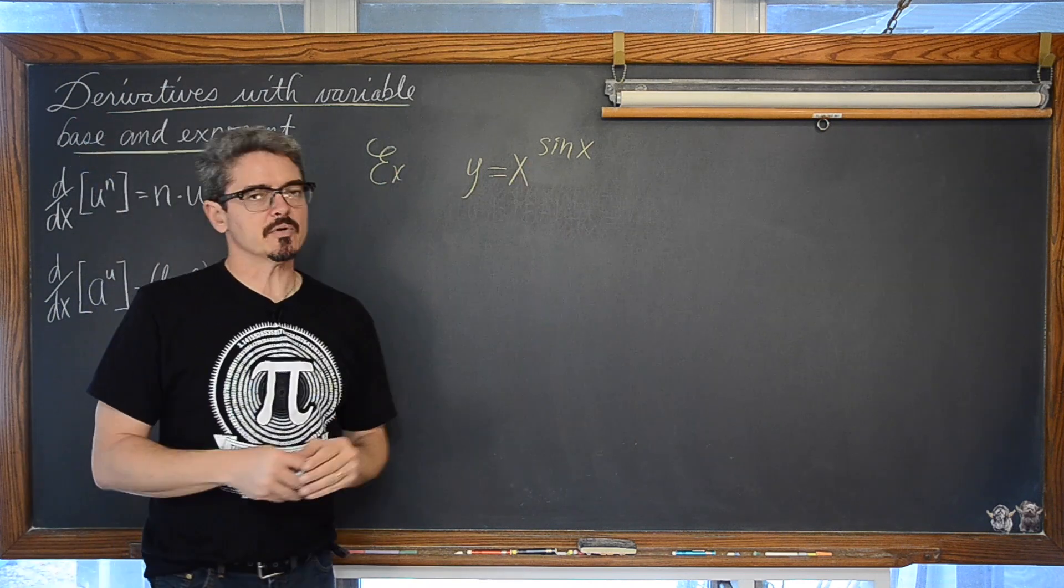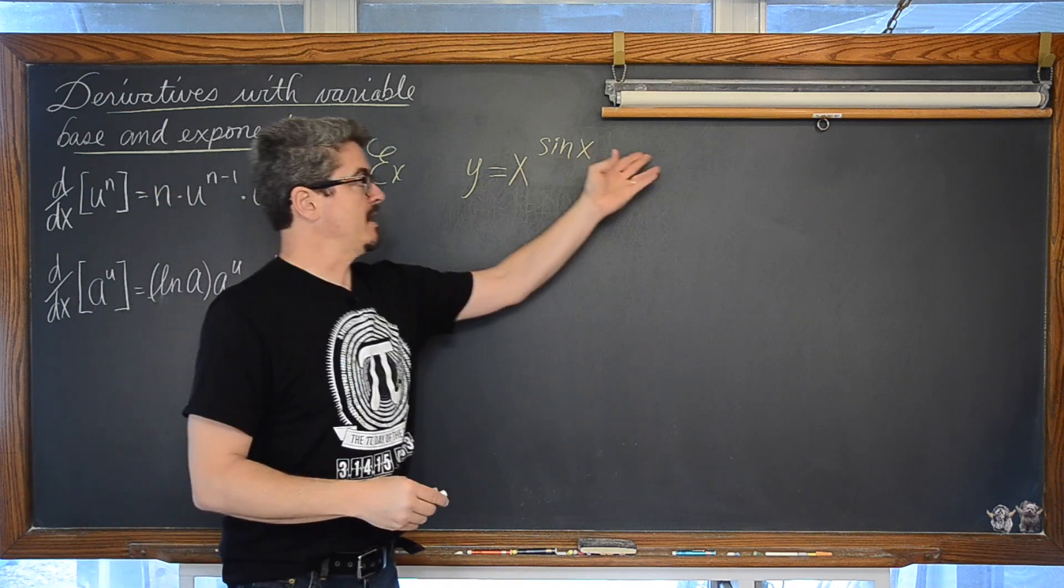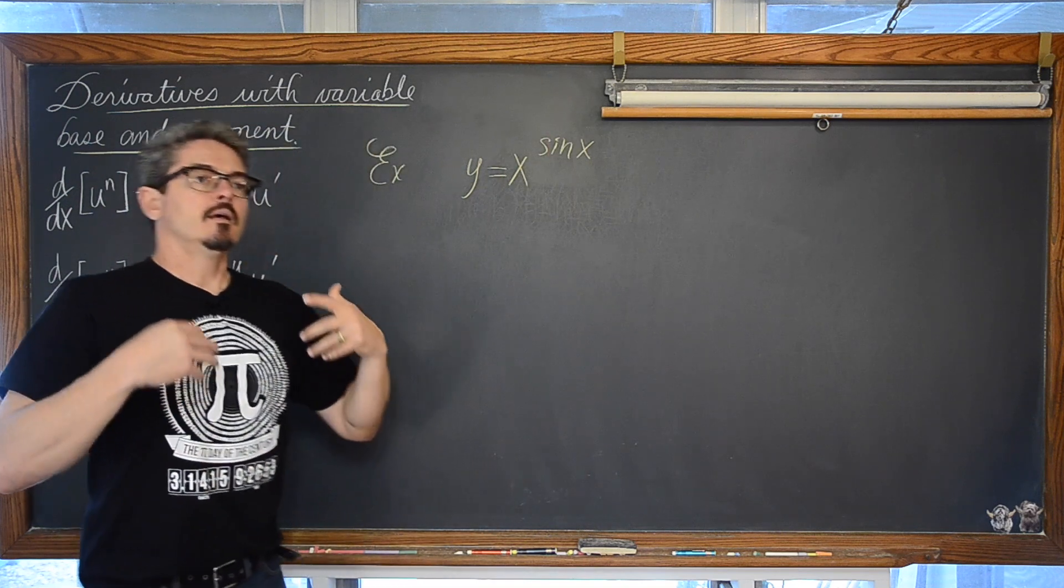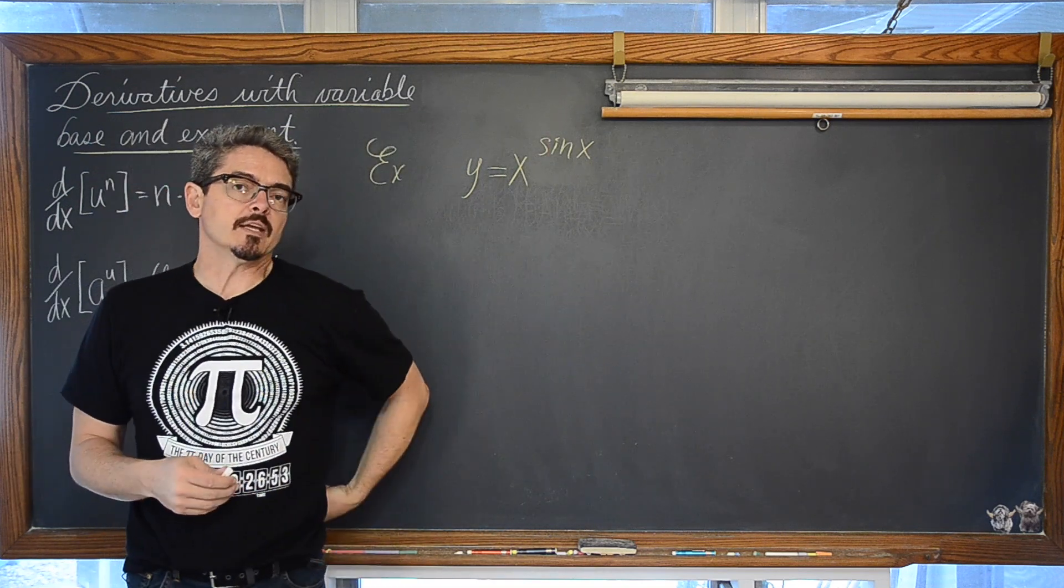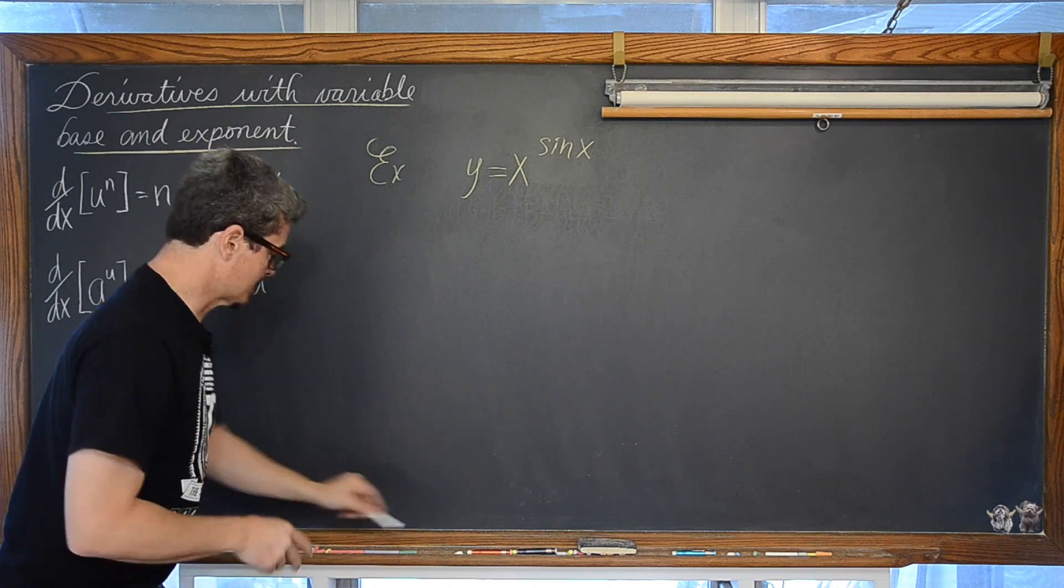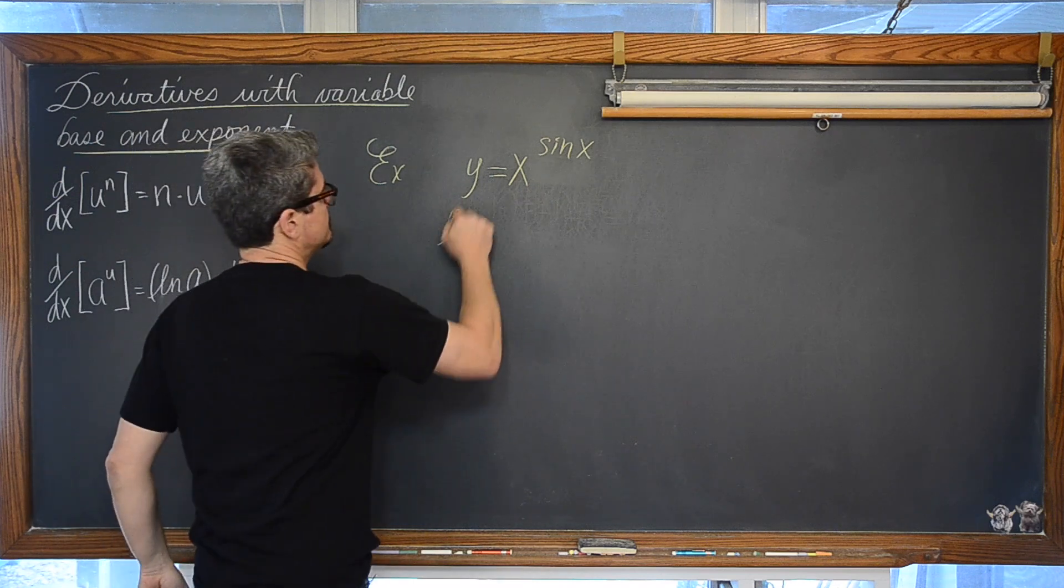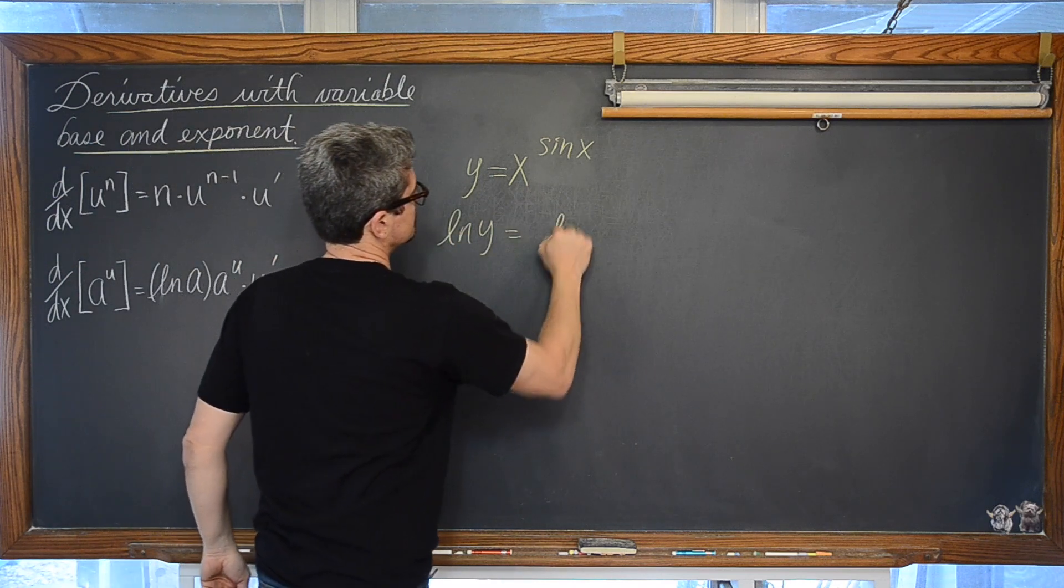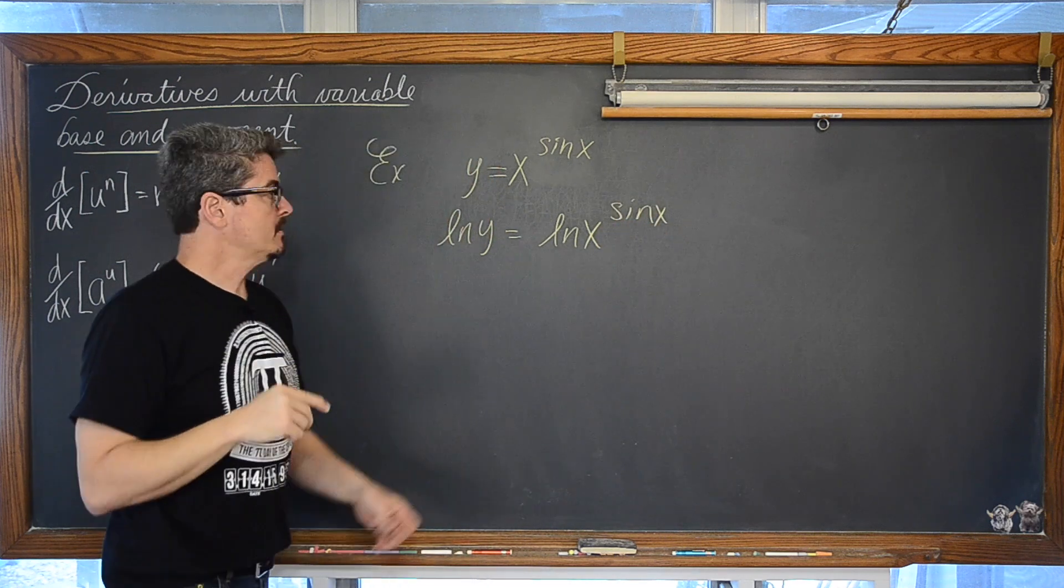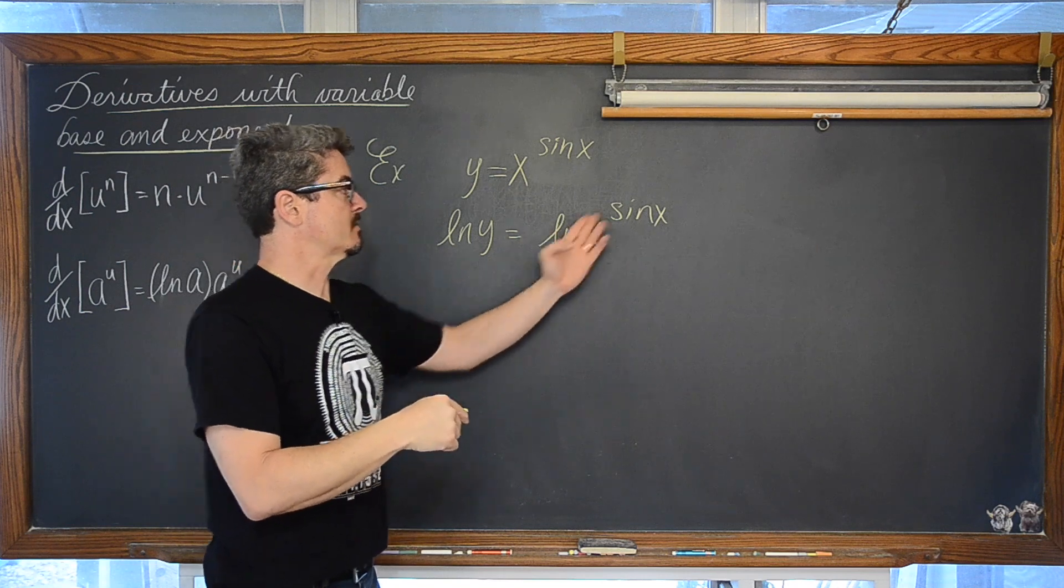we are going to take the natural log of both sides, use the power property of logarithms to expand this so we don't have a function raised by another function, take the derivative implicitly and then ultimately arrive at an answer for y prime or dy dx. And this is what it is going to look like. Take the natural log of both sides.